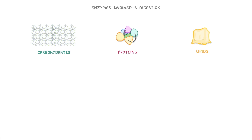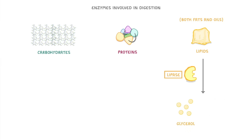Lastly, we have lipids, which refer to both fats and oils. These are found in things like avocados and olive oil. In either case, they're broken down by lipase enzymes into smaller molecules called glycerol and fatty acids.